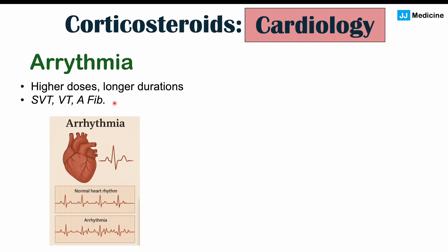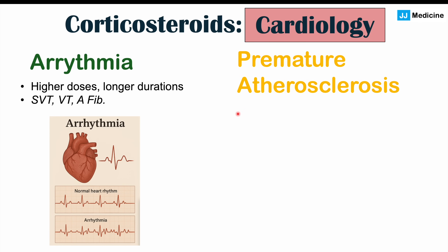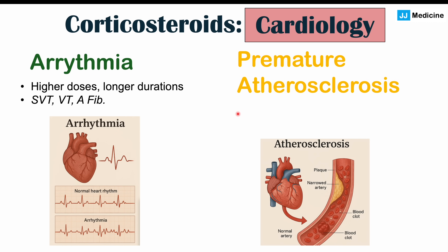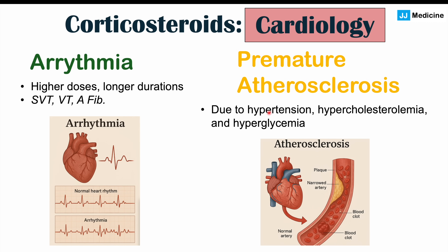In some patients we can also see bradycardia — a heart rate below 60. Premature atherosclerosis is something we can note in patients taking long-term systemic corticosteroids. This is likely due to a combination of factors including hypertension, hypercholesterolemia, and hyperglycemia — all of which can be seen with corticosteroid use. These metabolic effects lead to an increased risk of premature atherosclerosis.